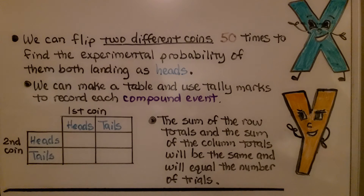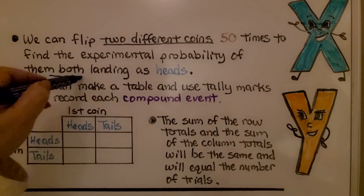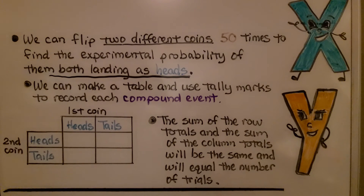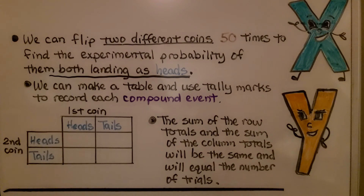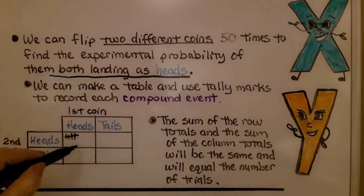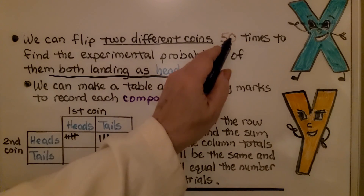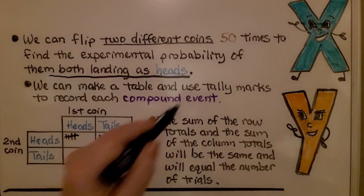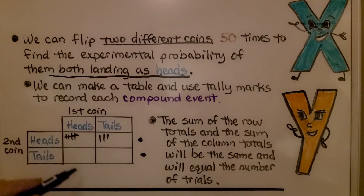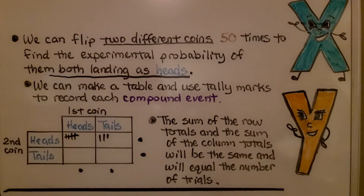Now you can try this one at home. Flip two different coins 50 times to find the experimental probability of them both landing as heads. Make a table and use tally marks to record each compound event, since each coin is a simple event and together they form a compound event. The total will be 50 trials. The sum of each row and the sum of each column will both equal 50, which will be our denominator when we write it as a ratio.